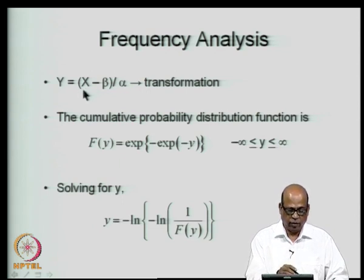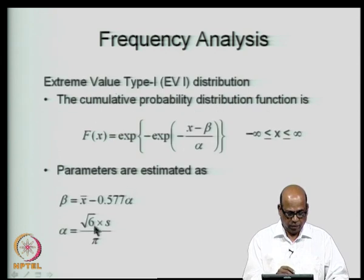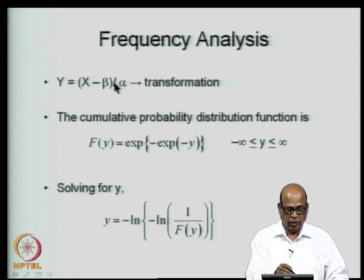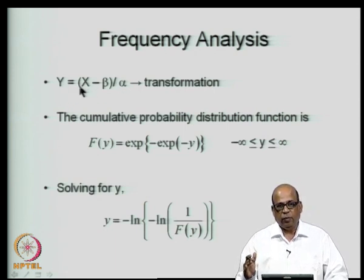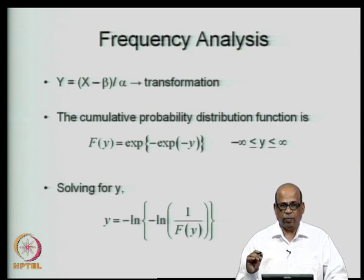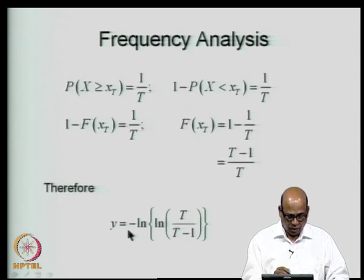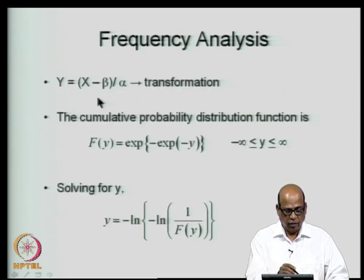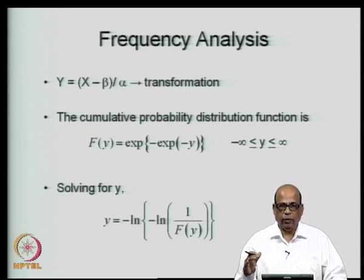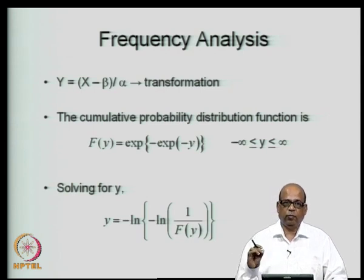From the observed annual maximum stream flow data we estimate α and β. Then for a desired return period T, we compute y_T and back-transform to x_T = β + α·y_T. This is how we obtain magnitudes corresponding to a given return period when using the EV Type 1 distribution.